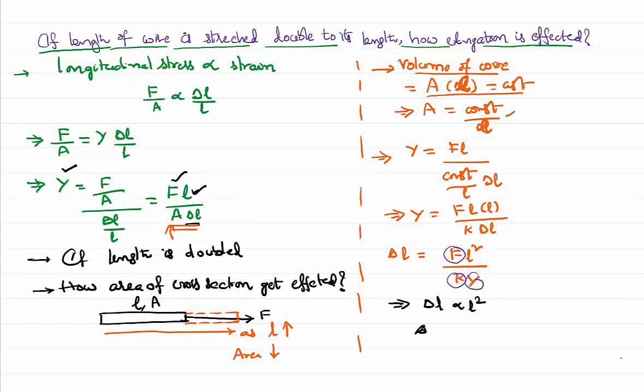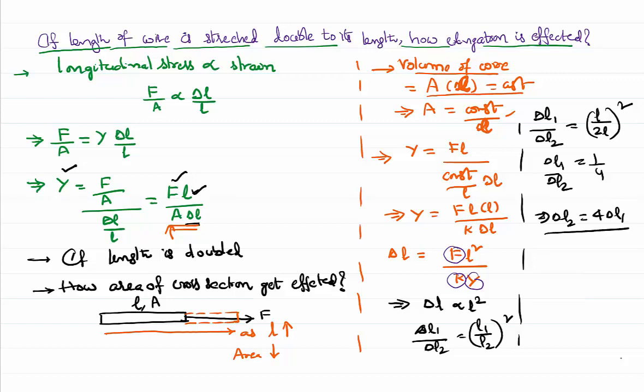Delta L1 by delta L2 equal to L1 by L2 whole square. Now increase in the length in the first case when the length is L, in the second case when the length is doubled, that is 2L, is L by 2L whole square. L and L will get cancelled, 1 by 4. So I can say delta L2 is 4 times delta L.